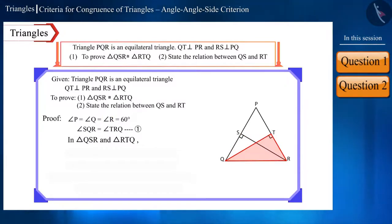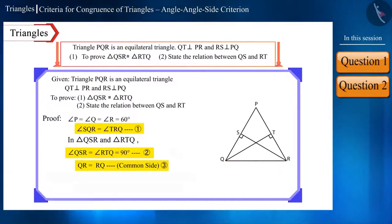Now, in triangles QSR and angle RTQ, angle QSR and angle RTQ will be equal because these are right angles and side QR is a common side. Looking at the equations 1, 2 and 3, we can say that this triangle is congruent according to the angle angle side or AAS congruence rule.